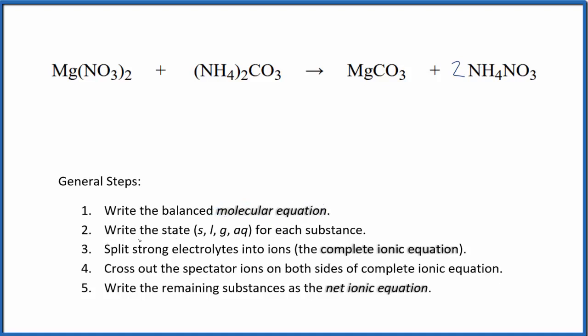Now we need to write the states for each substance based on the solubility rules. If you know your solubility rules, nitrates are very soluble - magnesium nitrate and ammonium nitrate are aqueous. Ammonium compounds are also very soluble, so ammonium carbonate is very soluble even though carbonates in general aren't soluble, like magnesium carbonate.